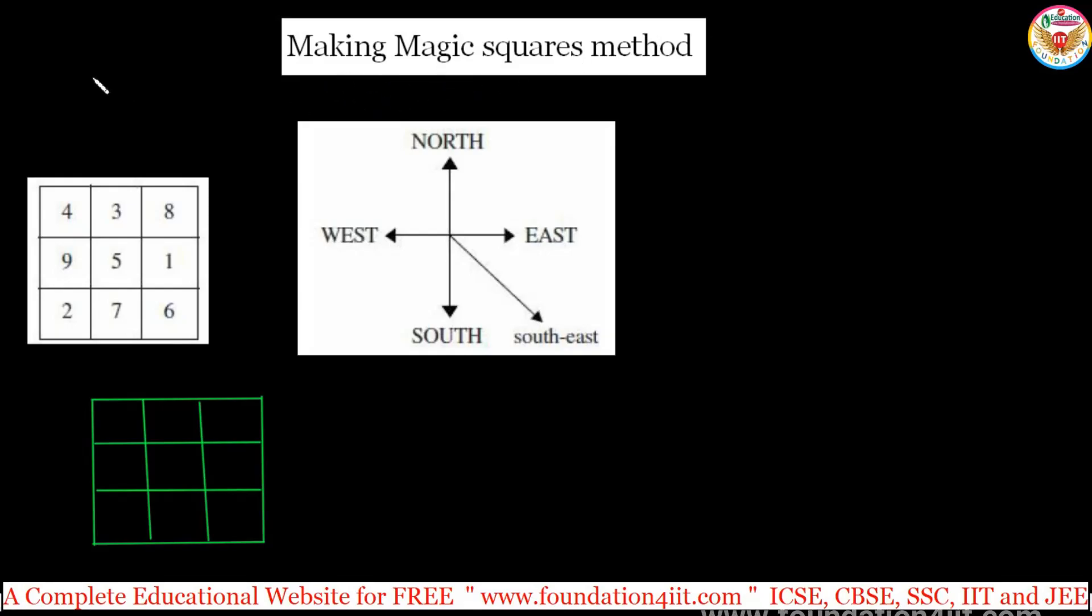Making of magic squares. To do any magic squares like odd number, or 3 rows 3 columns, 5 rows 5 columns, 7 rows 7 columns, or 9 rows 9 columns, how to make in simple method.